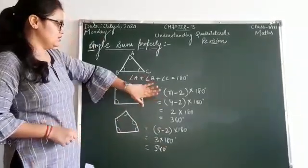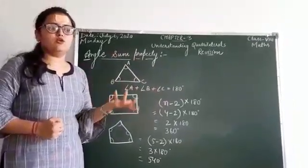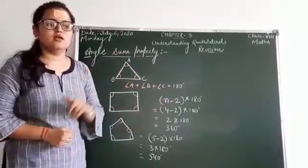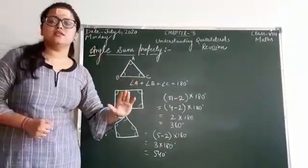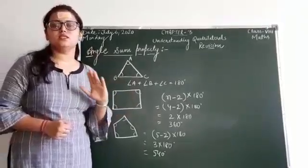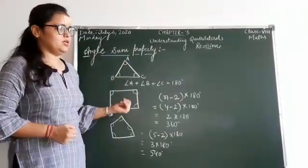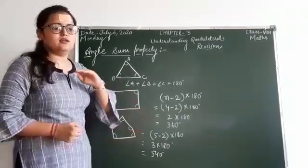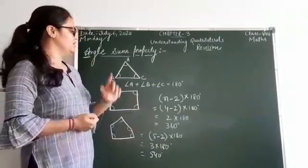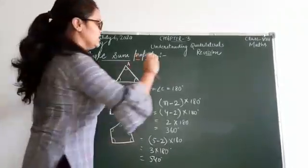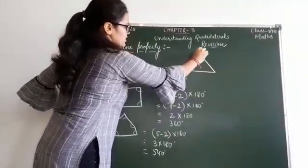This is the angle sum property for interior angles of a polygon. But what about the exterior angles of a polygon? In the case of exterior angles, the sum of all exterior angles is always equal to 360 degrees — whether it is a triangle, quadrilateral, pentagon, hexagon, or octagon. In any polygon, the sum of exterior angles equals 360 degrees.